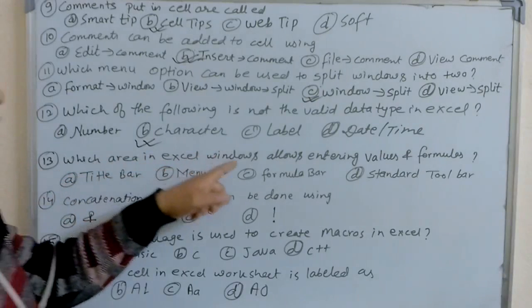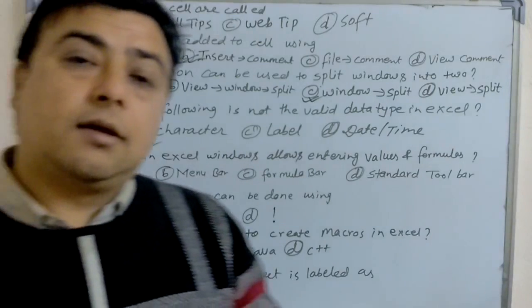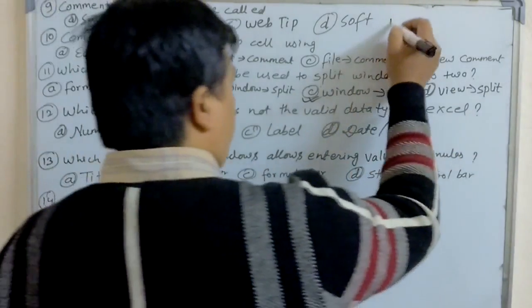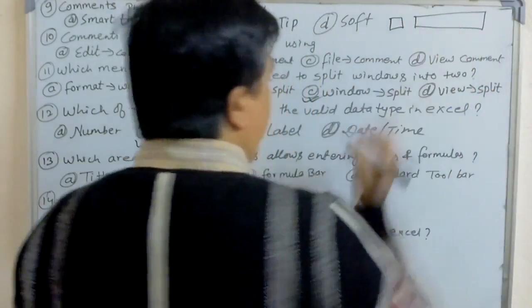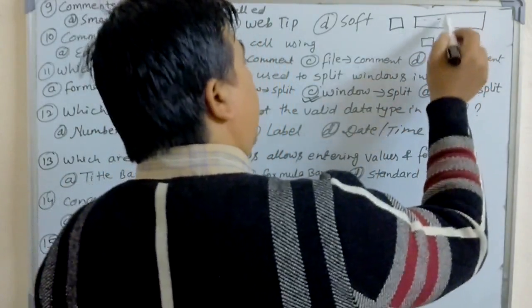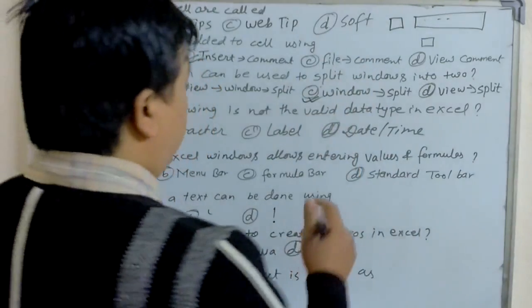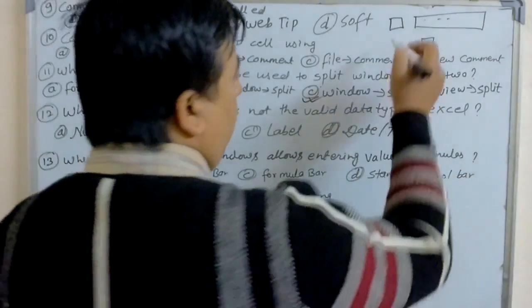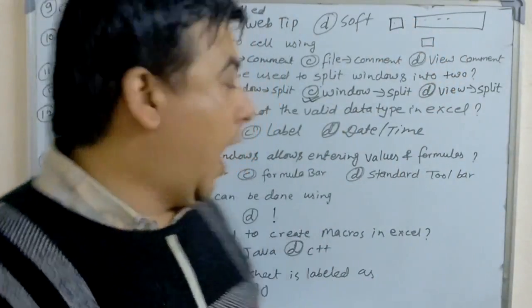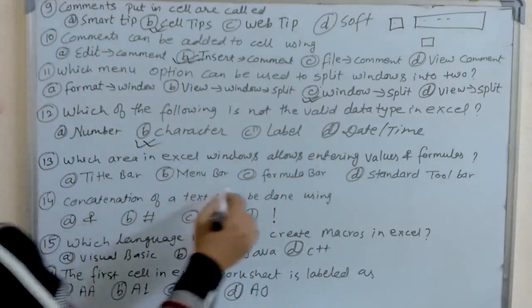Thirteenth question: which area in the Excel window allows entering values and formulas? There are two parts — the name box and the formula bar. Whatever you write in the active cell, you can see it in the formula bar. You can also edit from the formula bar. The name box shows which cell is currently active. The formula bar in Excel allows entering values and formulas. That's why the answer is C.